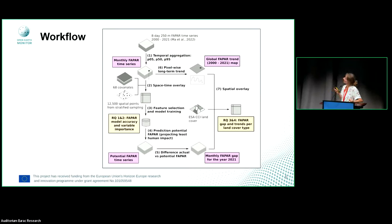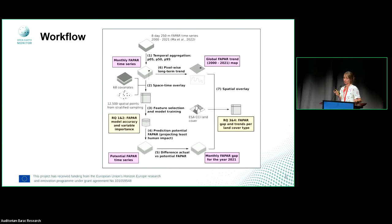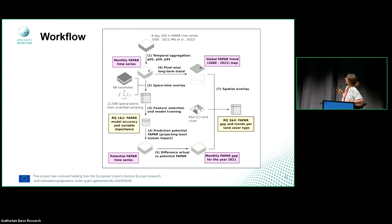We then used this model to project the potential FAPAR — what the FAPAR would be if we remove some of the human impact. From that potential FAPAR, we can calculate the difference between the actual and the potential to get the gap. We also computed the long-term trend in the time series, so that from both the trend and the gap together, we can assess the state, aggregated per land cover classes.